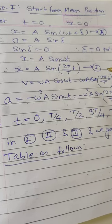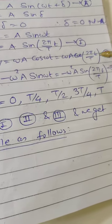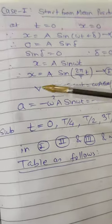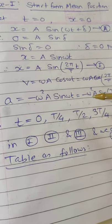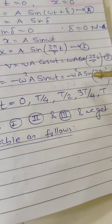Then x's derivative for acceleration: a will be minus ω²A sin ωt, that is minus ω²A sin(2πt/T), equation number three.